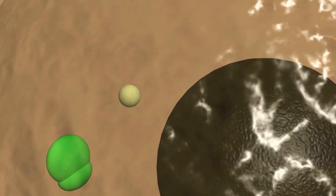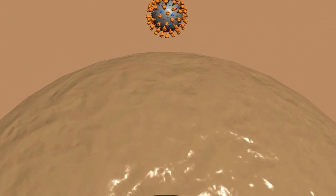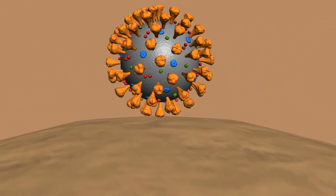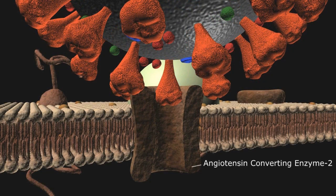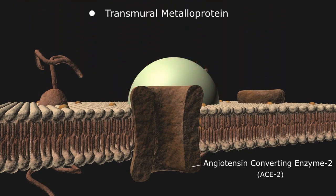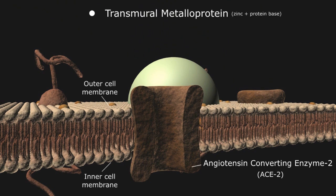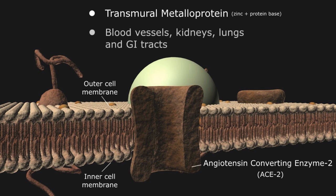The projections on the coronavirus are actually receptors that look for a specific host protein on the cell surface to bind. In this case, the receptor is an enzyme precursor called angiotensin-converting enzyme 2, or ACE2. ACE2 is a transmural metalloprotein, which means it extends all the way from the outer to the inner surface of the cell membrane and consists of a zinc metal attached to a protein support molecule. These proteins are found throughout the body, including the lining of our blood vessels, kidneys, lungs, and GI tract, which may explain some of the presenting symptoms such as pneumonia, GI distress, neurologic changes, and kidney failure.